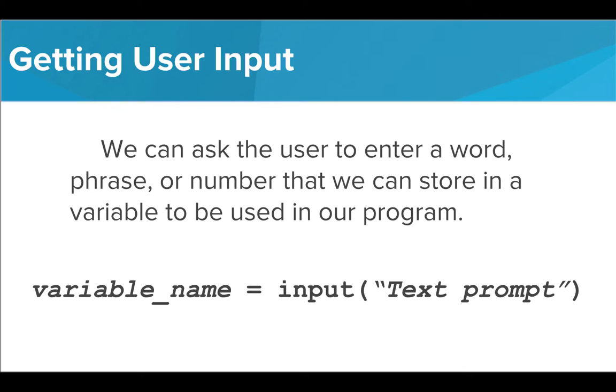We type the name of our variable followed by an equal sign. Instead of entering a value for the variable ourselves, we use the command input followed by a set of parentheses. Inside the parentheses, we write the text prompt that we want the users to see inside quotation marks.